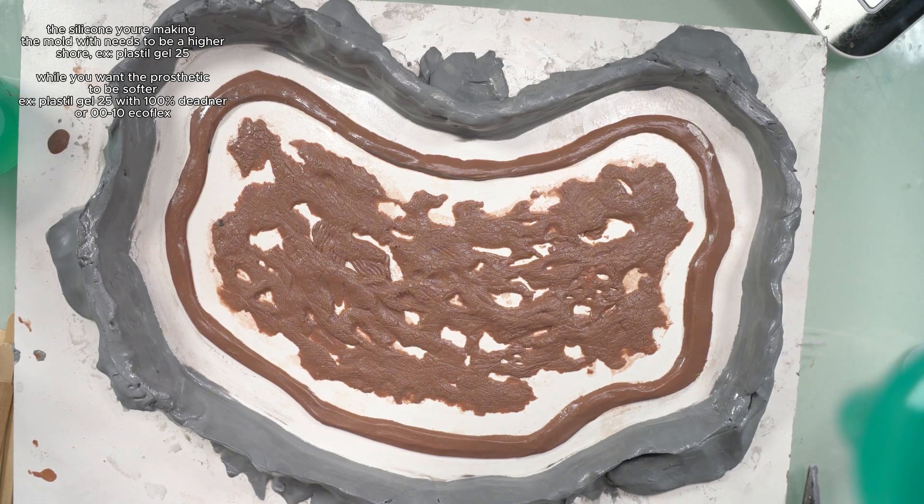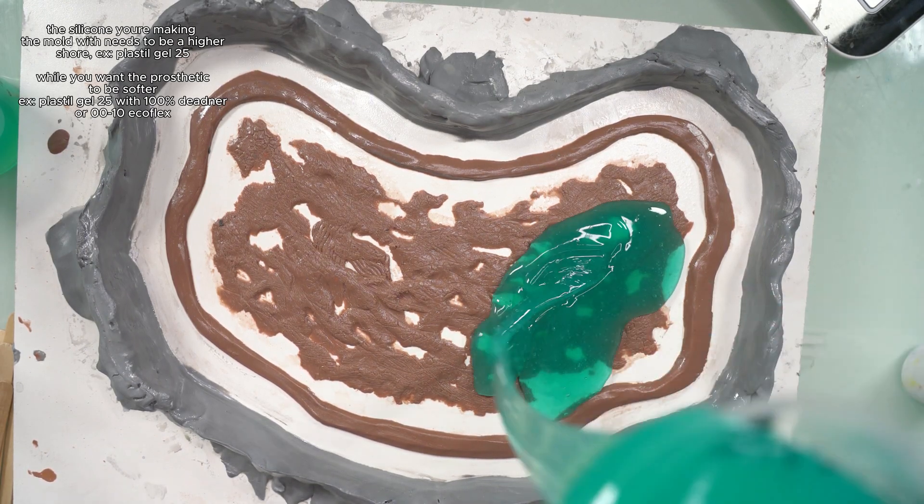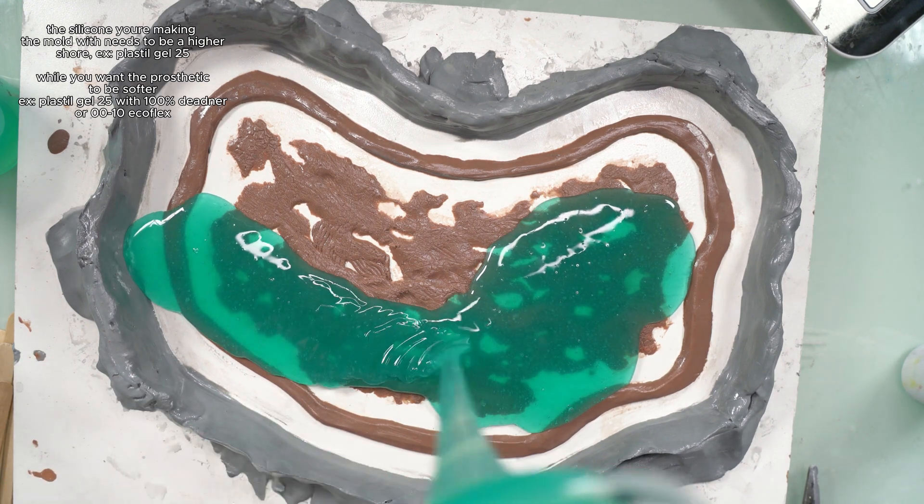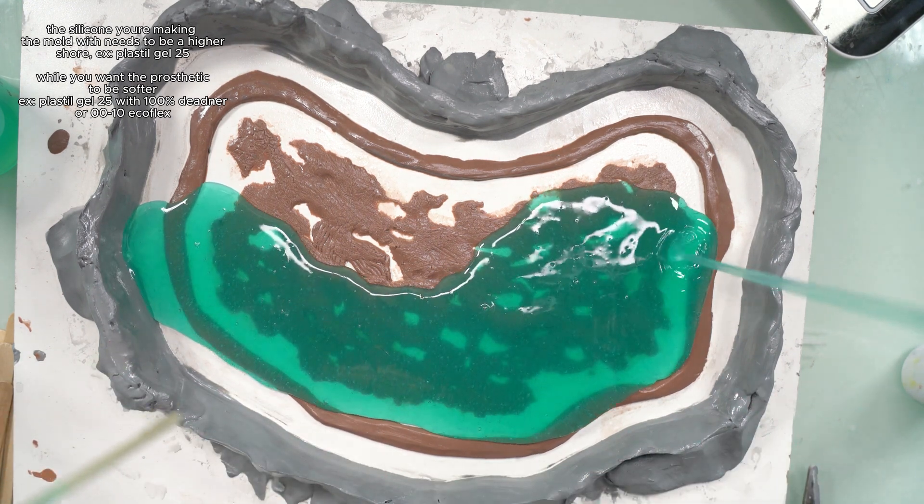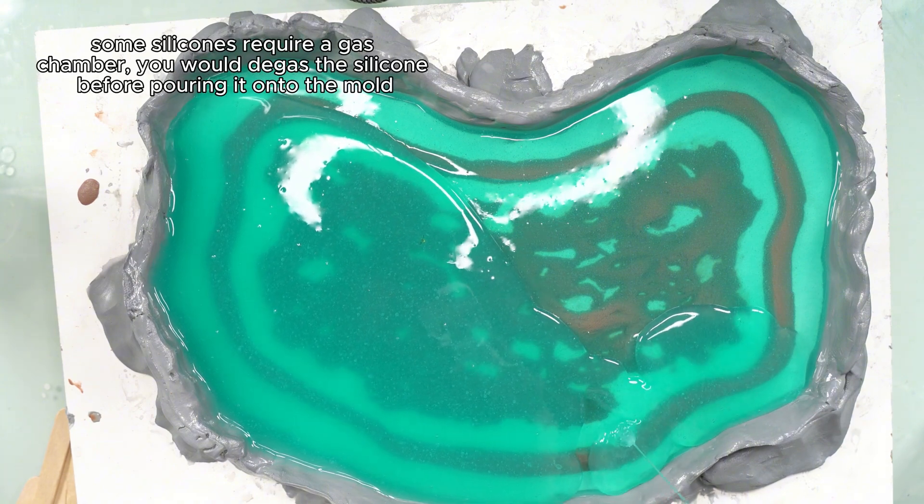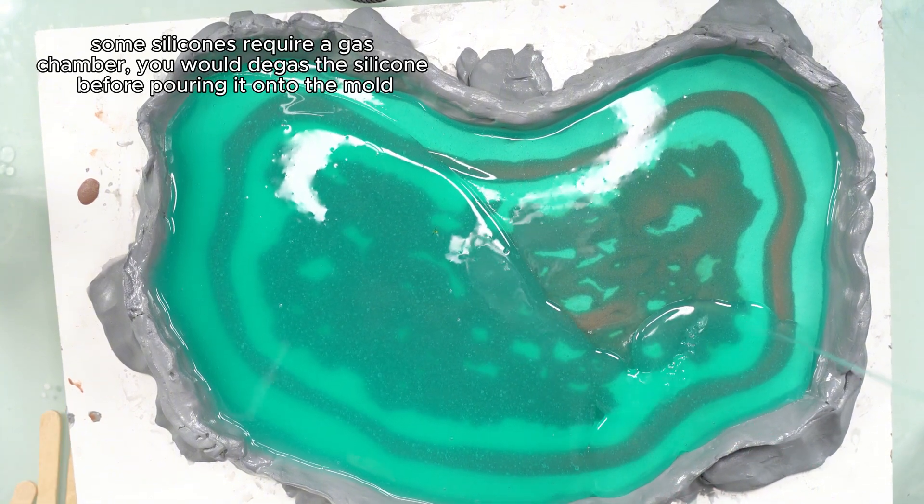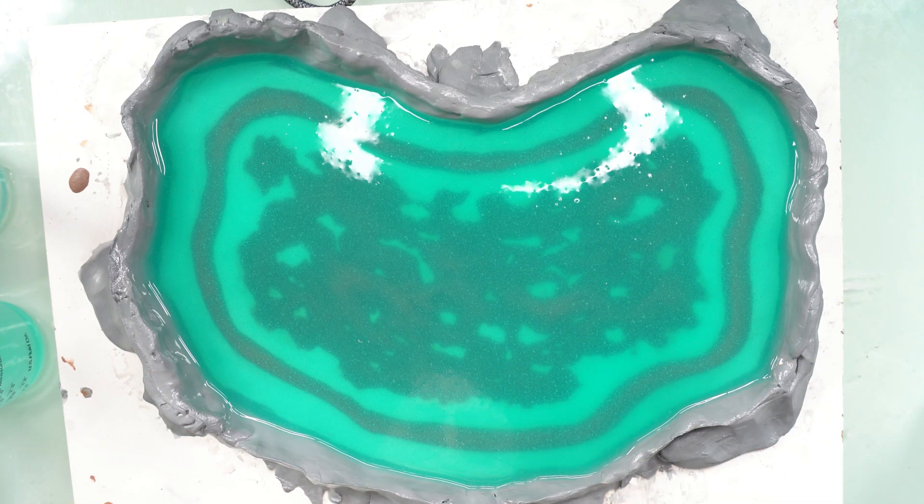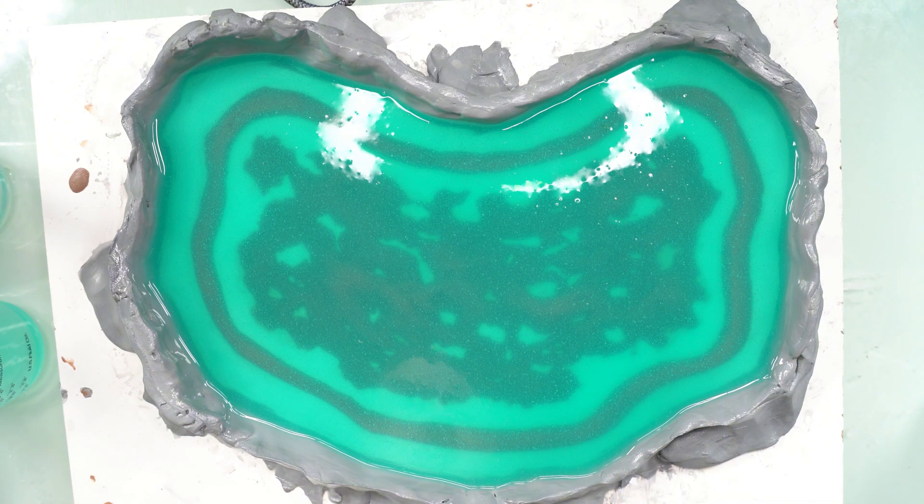When you're pouring it, make sure you go from high up too. I held this about three feet above the mold and that will just help get rid of any air bubbles. I didn't mix up enough in the first batch because I didn't have a big enough cup, so just make sure you have a big enough cup when you're doing this because it does add up to be quite a bit.